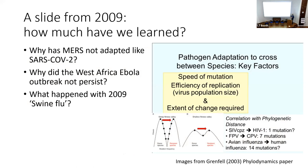On the right is a slide I used in my inaugural lecture from 2009. It picked data from an earlier follow-dynamic paper from some years before, where we identified that speed, mutation efficiency, replication, and virus population size were critically important drivers of getting from an organism that was not transmitting in one species to one that could — and its ability to do that depended to a very great extent on the extent of change required to achieve transmission in that new species.